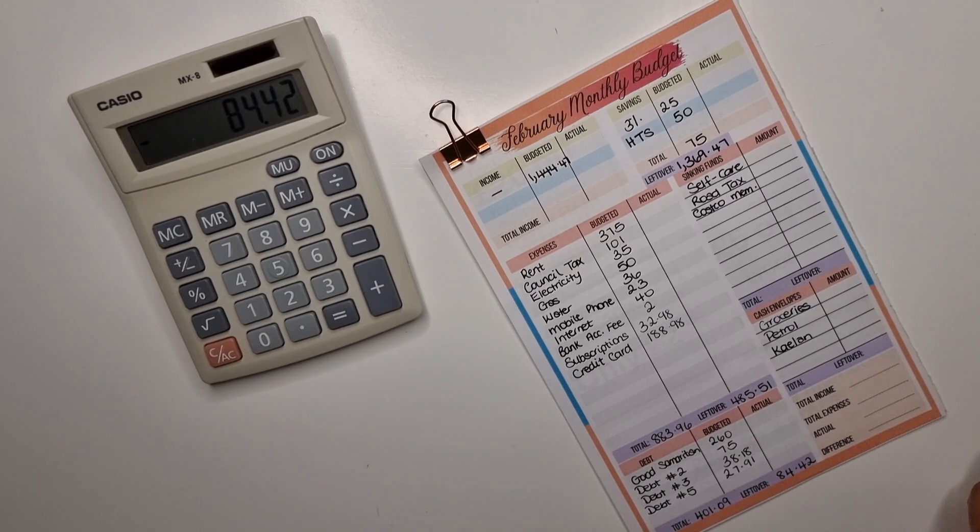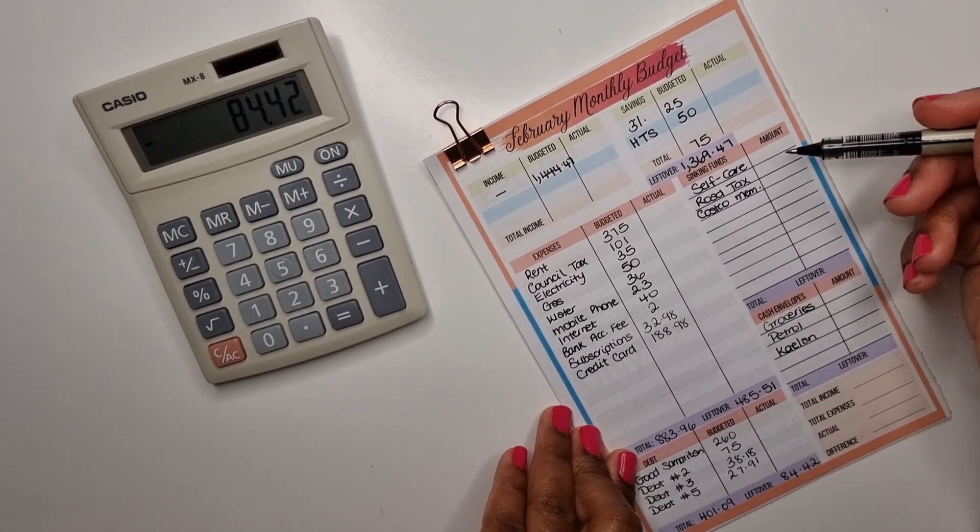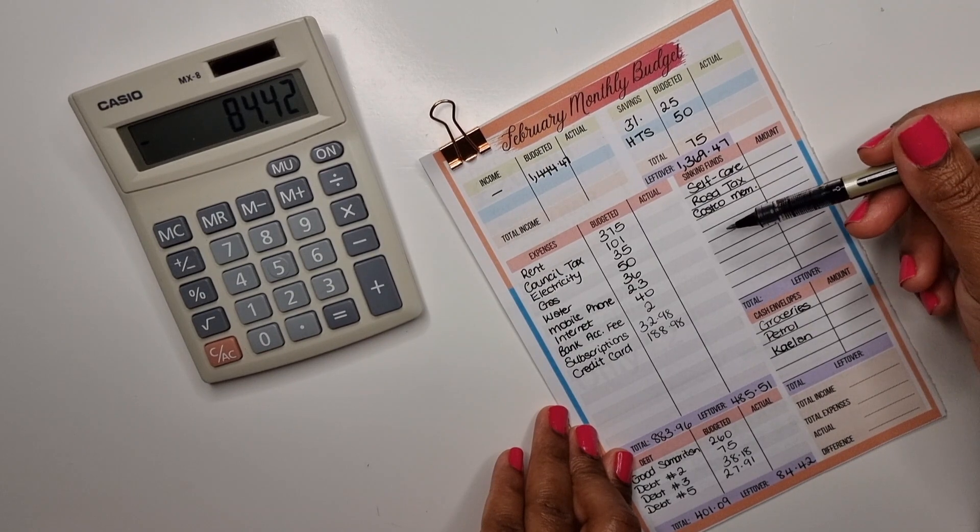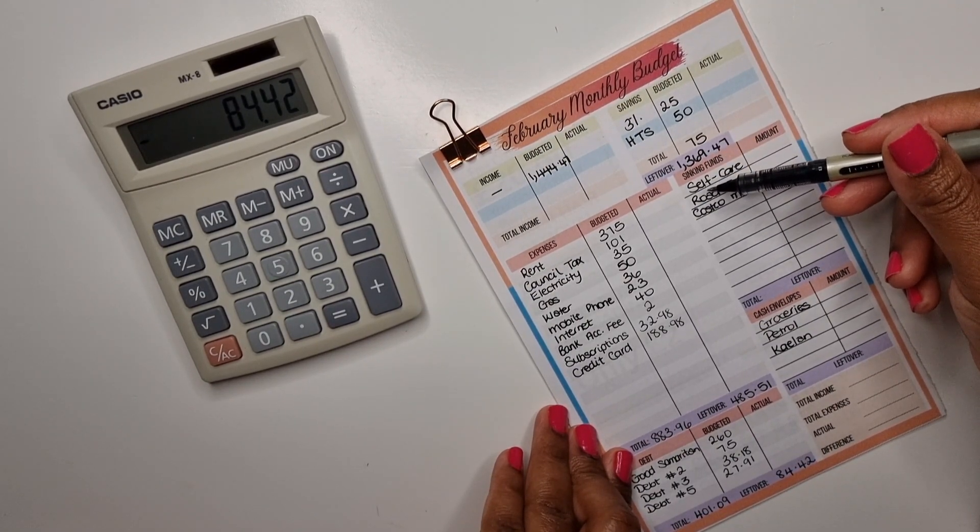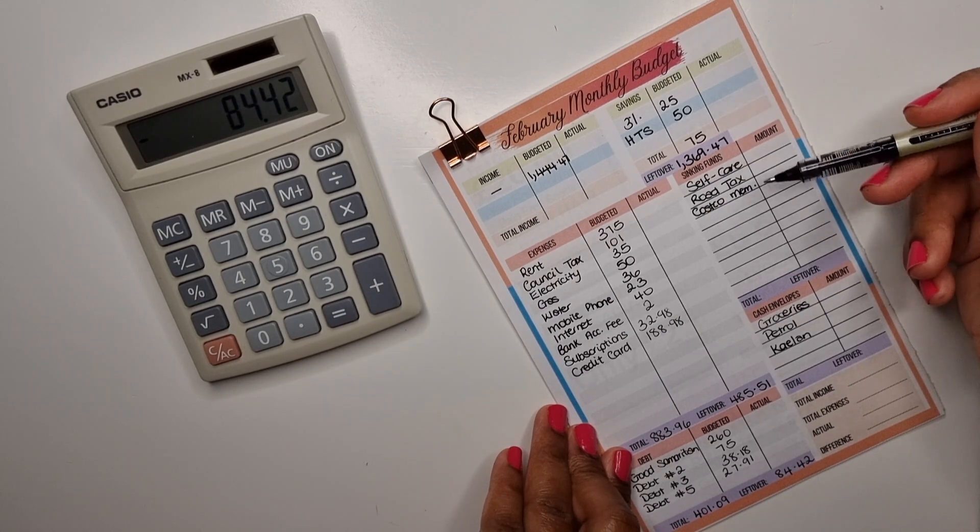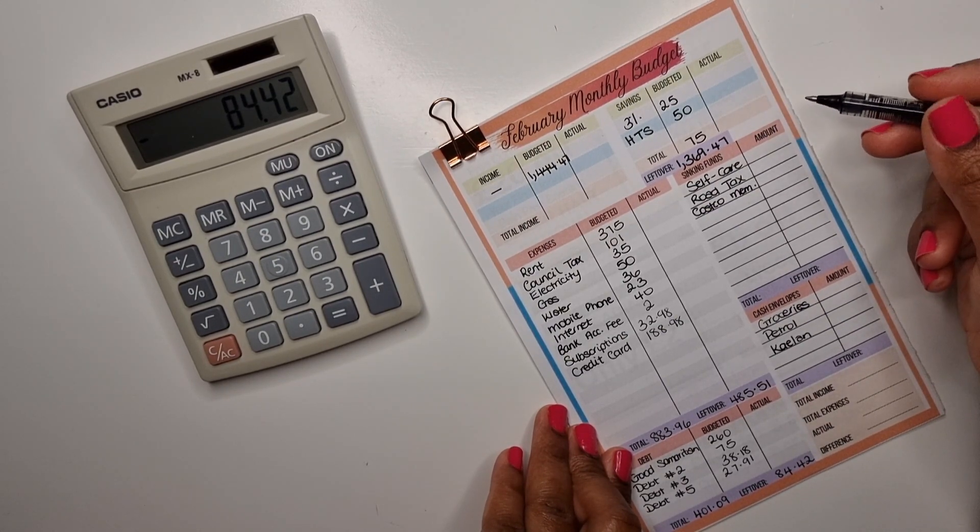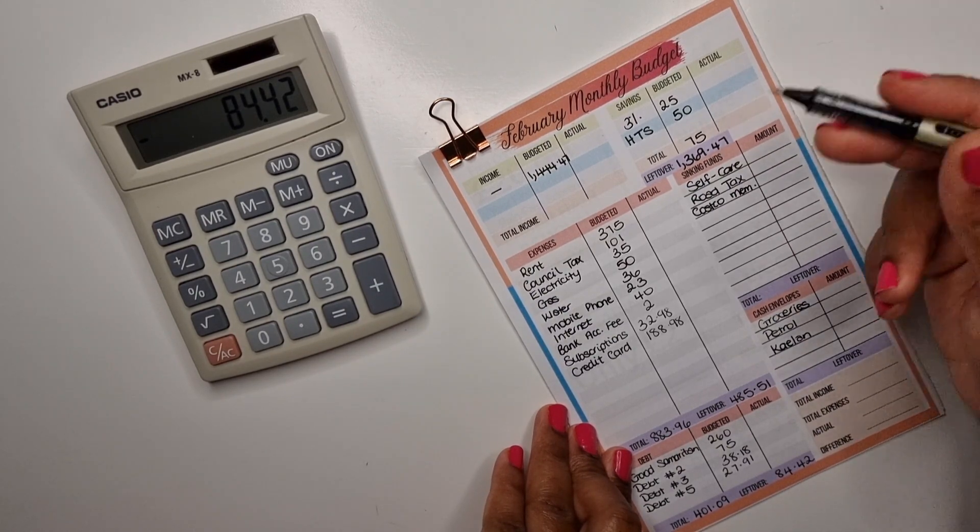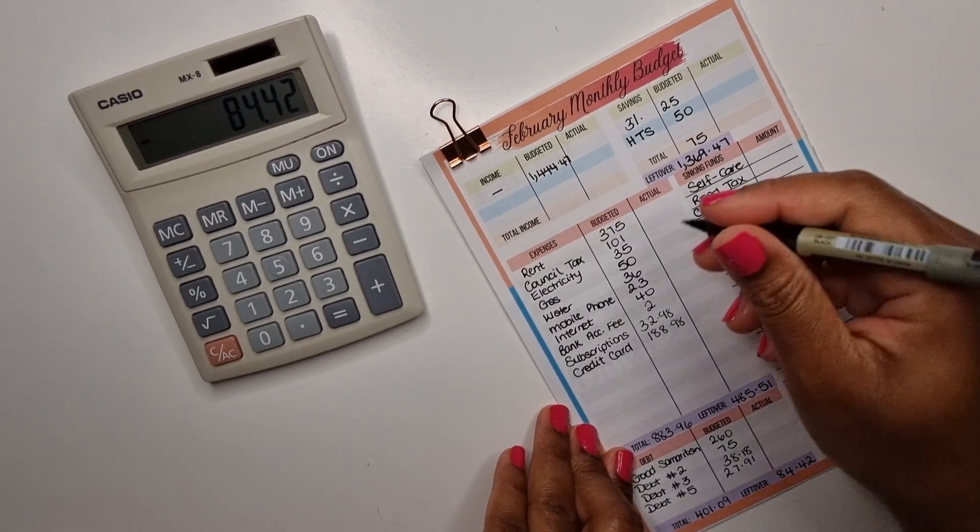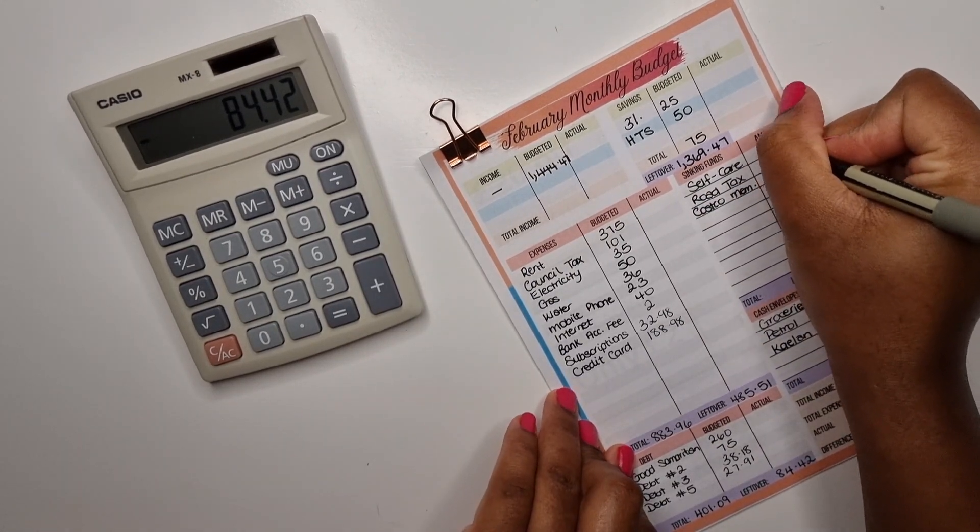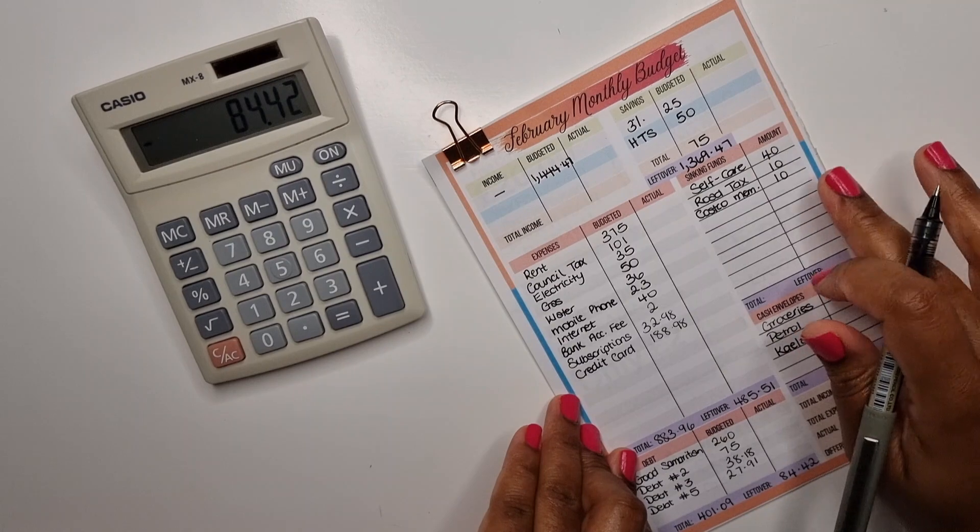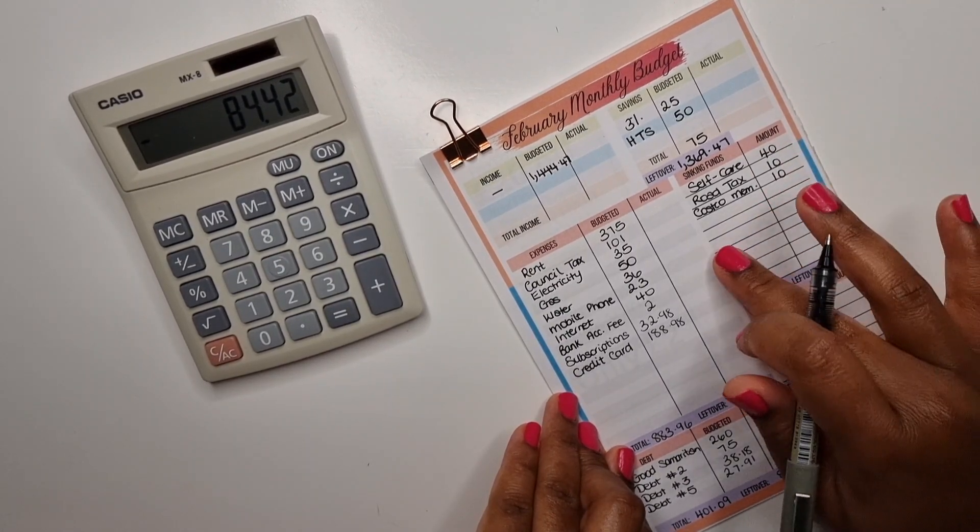For sinking funds, you will notice that the car maintenance isn't here. I sort of explained that in my last cash envelope stuffing video. I did take my car to get it serviced. I had around two seventy-three pounds, everything came up to about three fifty-one, so I did have to charge about seventy-seven or seventy-eight pounds onto my credit card. But like I said, this amount sort of cleared it off, and this also covers other expenses as well. So self-care is going to get funded because that's important to me. That's getting forty pounds. Road tax is getting ten, and Costco membership is getting ten.